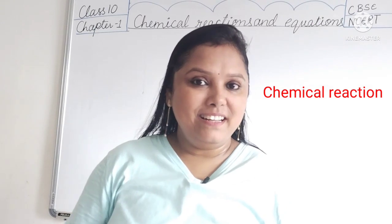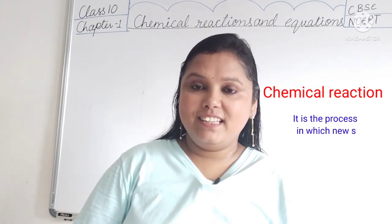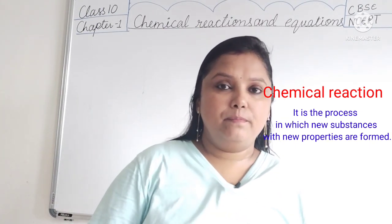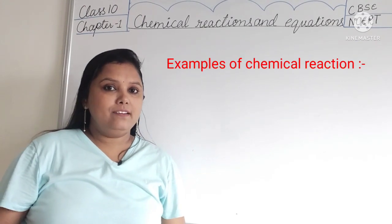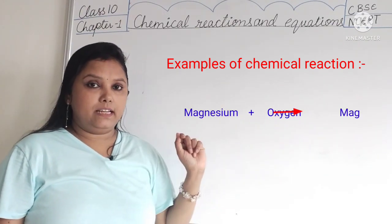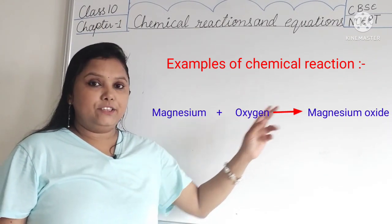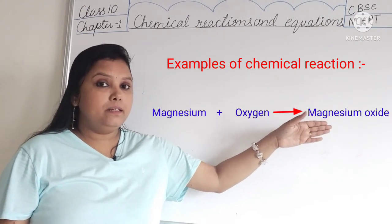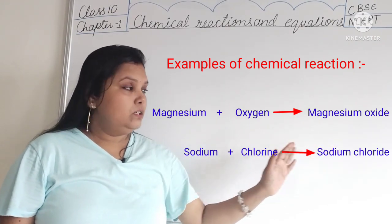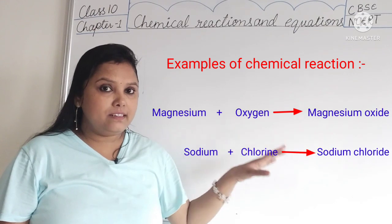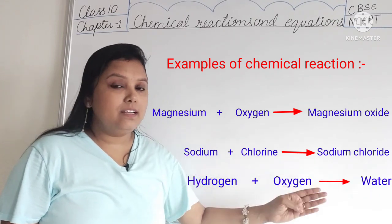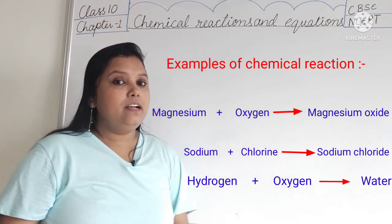So what is a chemical reaction? It is the process in which new substances with entirely new properties are formed. Some examples of chemical reaction are: magnesium burns with oxygen to form magnesium oxide. So in this reaction, a new substance, magnesium oxide is formed. Sodium reacts with chlorine to form sodium chloride. Sodium chloride is the new substance that is formed in this reaction. Hydrogen reacts with oxygen to form water. So water is that new substance which is formed in this reaction.